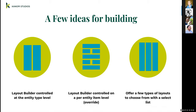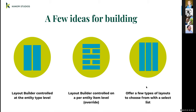Here are a few ideas for building. At the most basic level: Layout Builder controlled at the entity type level, not allowing overrides per entity. The next level: Layout Builder controlled on a per entity item level with overrides. Or you can offer a few types of layouts to choose from with a select list. I've been using the Drupal API function hook_entity_view_mode_alter — you can have a select list field and then use that hook to say which view mode gets chosen based on the selection.